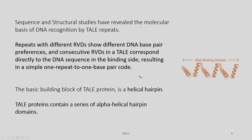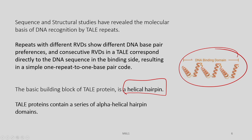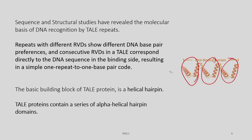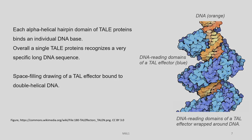The basic building block of the TAL protein is a helical hairpin. TAL proteins contain a series of alpha-helical hairpins arranged in tandem. Each alpha-helical hairpin domain of TAL proteins binds an individual DNA base. Overall, a single TAL protein would recognize a very long specific DNA sequence. On the right you can see a space-filling drawing of a TAL effector bound to double-helical DNA, coloured in orange, and the DNA reading domains of the TAL effector shown in blue, which are wrapped around the DNA.